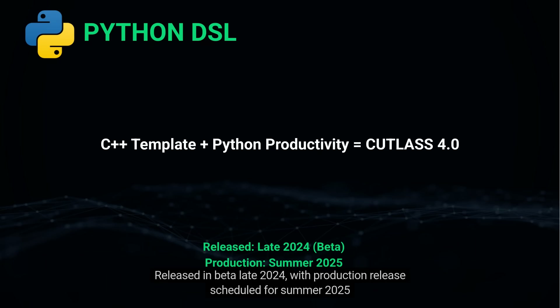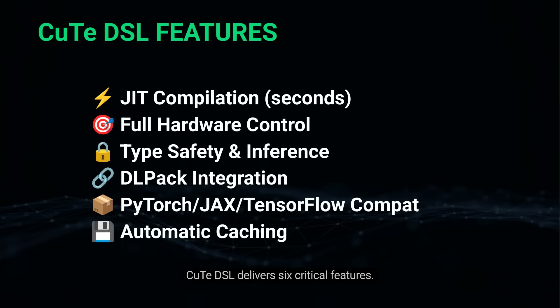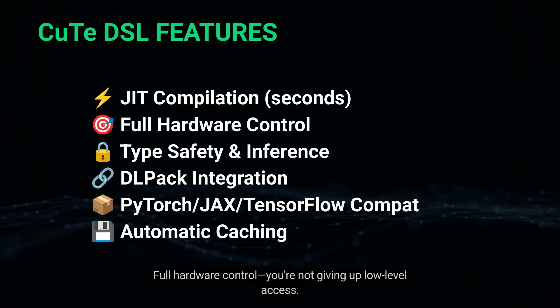Released in beta in late 2024, with production release scheduled for summer 2025. CuTe DSL delivers six critical features: JIT compilation in seconds, not minutes, and full hardware control — you're not giving up low-level access.